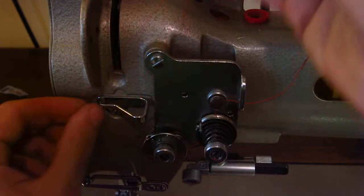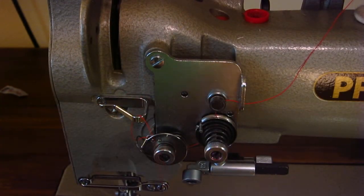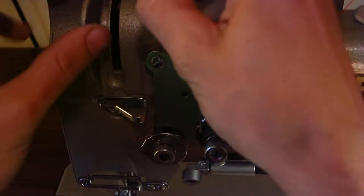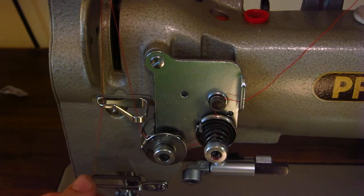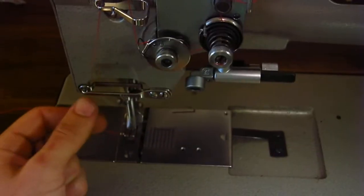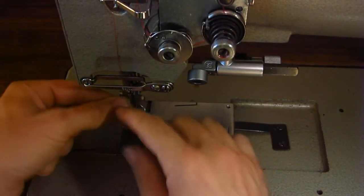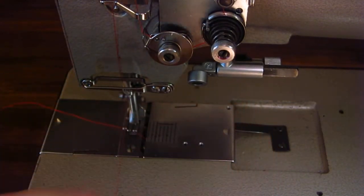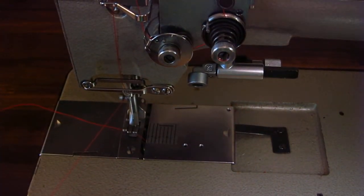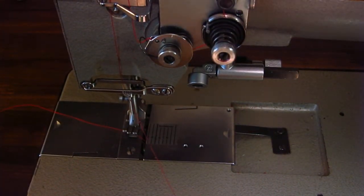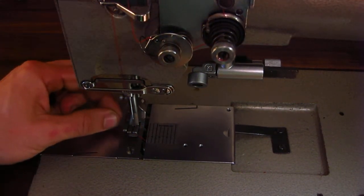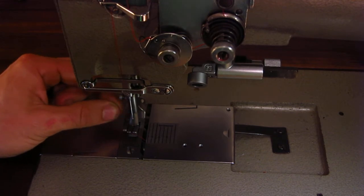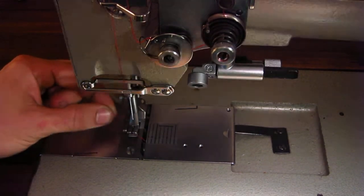So now you're going to go through the guide there. Into the take up lever. Down through that guide. Another guide here. Go through the needle bar guide. And then you're going to thread it left to right if I can see to do it.